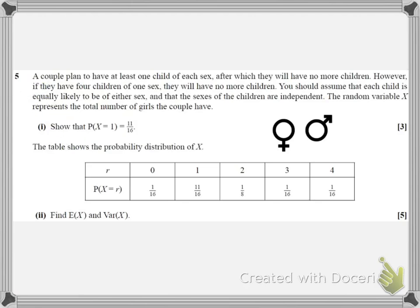So a couple plan to have at least one child of each sex, after which they will have no more children. However, if they have four children of one sex, they will have no more children. Picture this couple wanting to have some children and they want at least one boy and one girl, and it doesn't really matter what order they have the boy and the girl in, but as soon as they've got one of each, they're going to stop having children or they'll keep on going and if they get to the point where they've got four boys or four girls, they'll stop having children at that point. In the question it says we should assume that each child is equally likely to be of either sex and that the sexes of the children are independent.